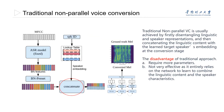Traditional non-parallel voice conversion is usually achieved by concatenating the linguistic representation with the learned target speaker's embedding. While such a concatenation-based approach could introduce speaker-specific characteristics into the network, it is not very effective as it entirely relies on the network to learn to combine the linguistic content and the speaker characteristics.